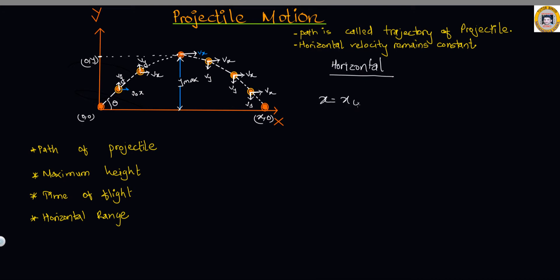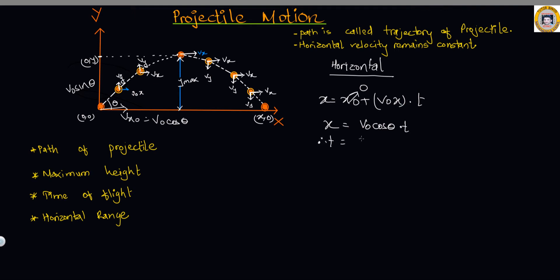For horizontal motion, we have x equals x-naught plus v-naught-x times t. But since we start from the origin, x-naught cancels out, giving x equals v-naught-x times t. The x-component of velocity is v-naught cosine theta, so x equals v-naught cosine theta times t. Solving for t gives t equals x over v-naught cosine theta — let me write this as equation one.